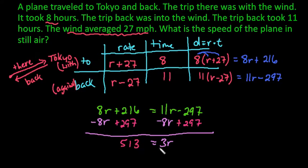And then our last step would just be to get r by itself, so I would divide both sides by 3, so we could say that r is equal to 171 miles per hour.